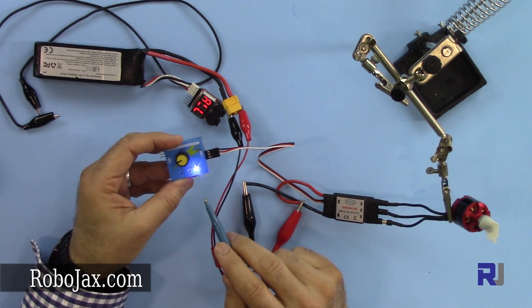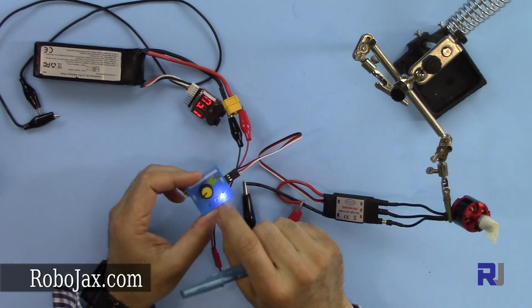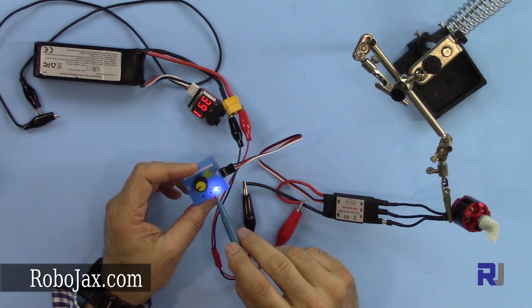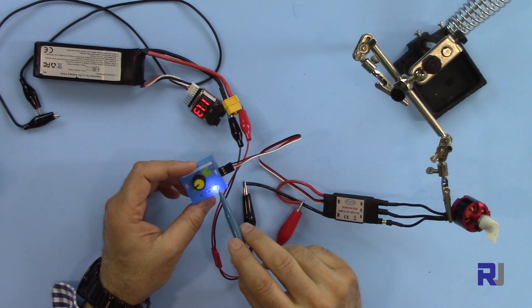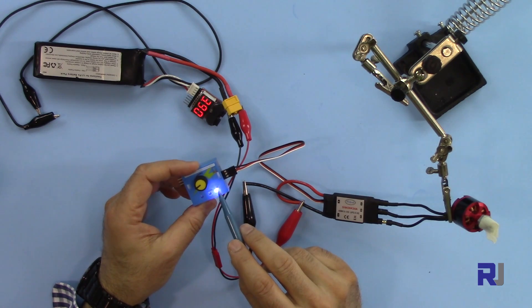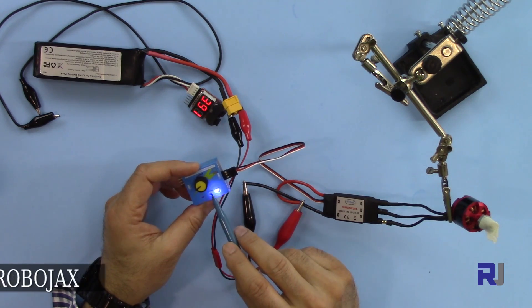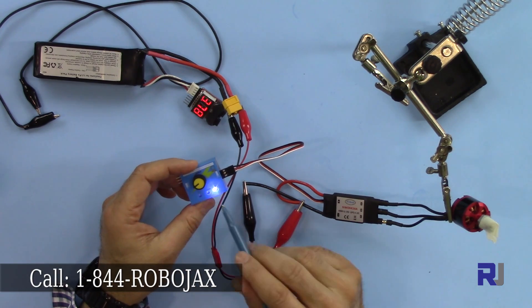So now this is connected. We have here three different modes: one is continuous value, and the other one is automatic, the other one is manual. So we have manual, and then continuous, and then automatic. So these modes can be selected with the switch here.